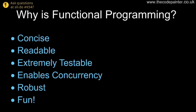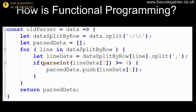So why are we interested in functional programming? It's concise — you can compress pages of code down to just a couple of lines. It's more readable, mostly because of that concision, and it tends to enforce writing code in an order of operations that's more logical and consistent with what we're actually trying to achieve. It's very testable, supports concurrency, is robust — and it's fun. I hope everyone will agree by the end.